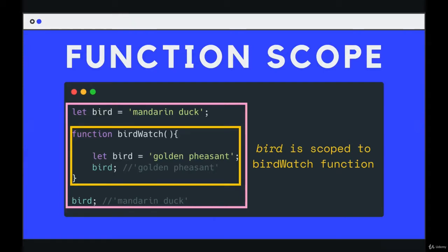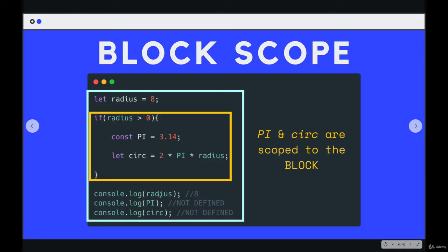In the last video we talked about function scope, where if we declare a variable with any keyword — whether it's let, const, or var — within a given function, it is scoped to that function and we don't have access to it outside that function. Now we're going to see a different type of scope called block scope.